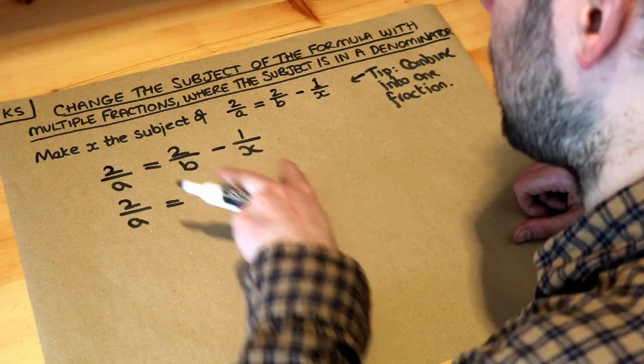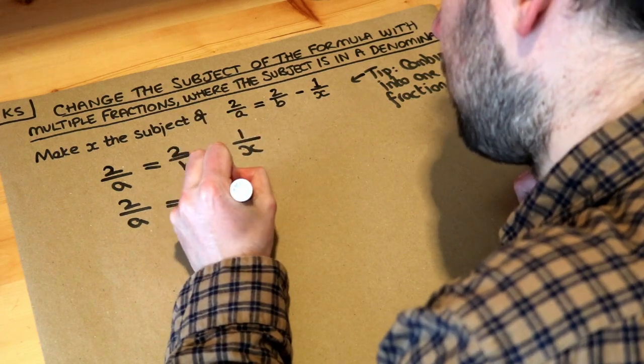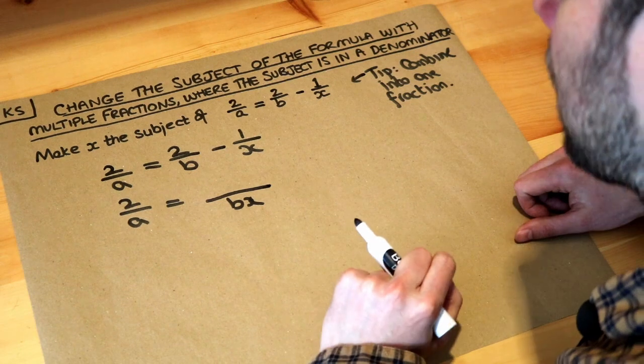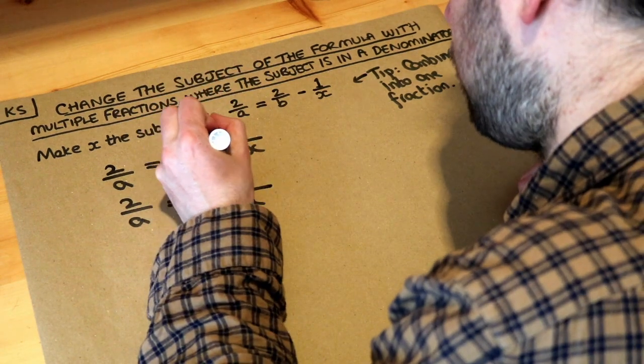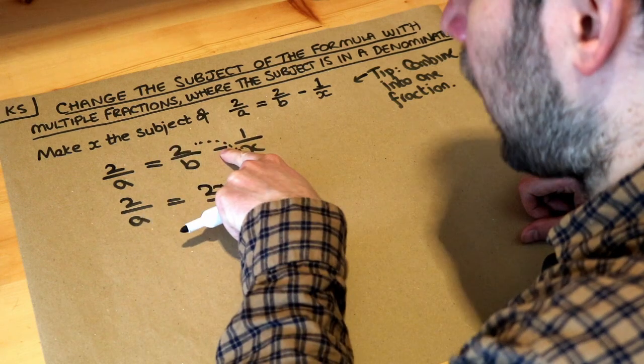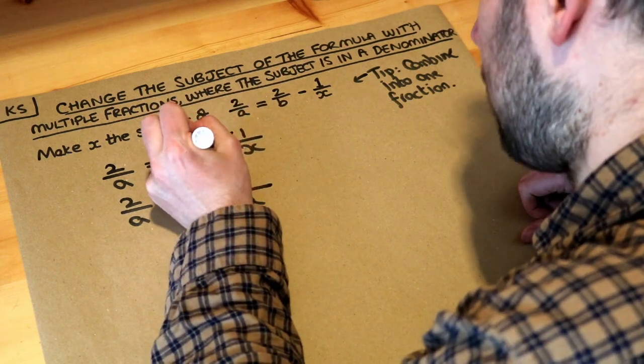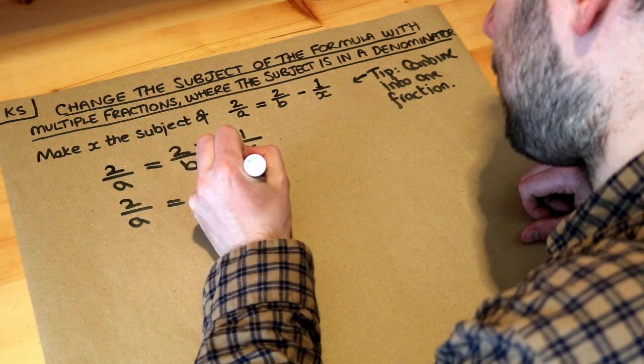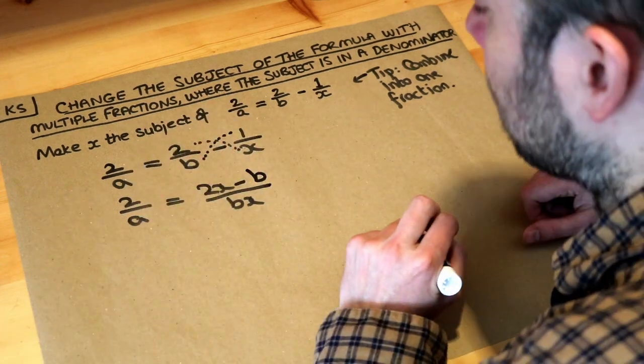Well a quick way we can do it is just multiply the denominators, so b times x, and then we cross multiply the numerators. So we do the 2 times the x first, so 2x, then we've got minus in the middle, and then 1 times the b. 1 times b is just b. So that's the quick way to subtract fractions.